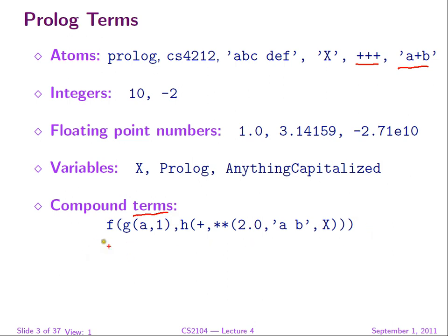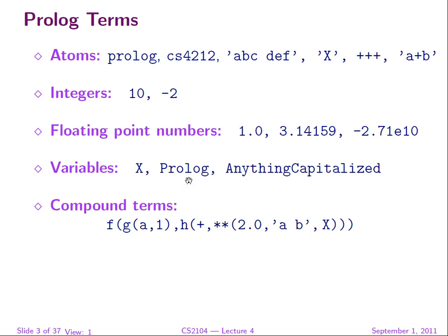Terms are constructs that resemble the syntax of a mathematical function, but no call is made. We have a functor name and then arguments which can themselves be terms, and those terms have their own arguments. At the lowest level we have atoms, numeric constants, or variables — these are the leaves. The functor name must be an atom; it cannot be a variable or an integer. This is similar to a structure in C — it's a way of aggregating data.